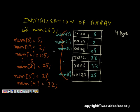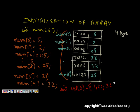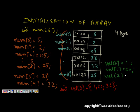But we want to initialize at the declaration and definition itself. There is a simple way to do this. For example, int val[3] = {1, 20, 36}. This means val[0]=1, val[1]=20, and val[2]=36.